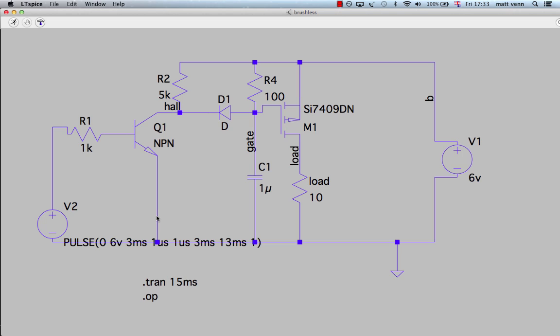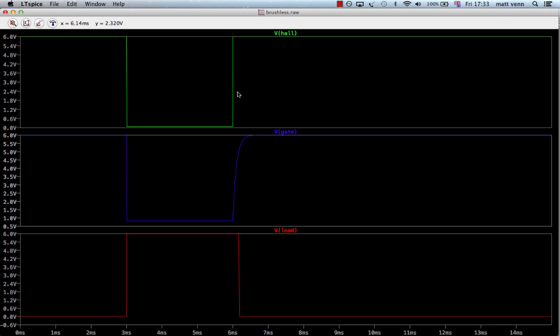We can also simulate what we saw on the scope using this program called LTSpice. So at the moment I've got my potentiometer set to 100 ohms. Now if I run the simulation the key thing to look at is the length of time of this lower pulse. The time that the solenoid is switched on for compared to the hall effect pulse, this top one.